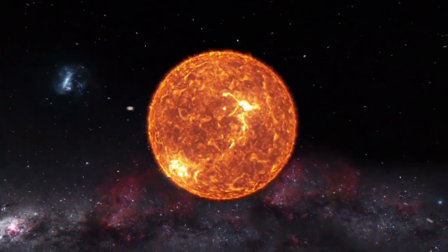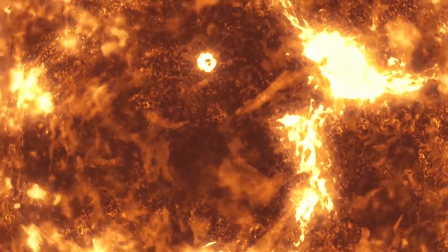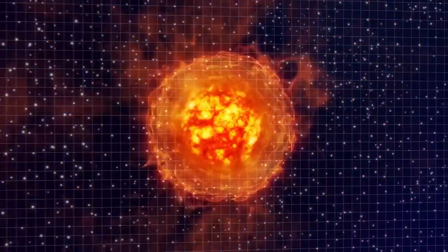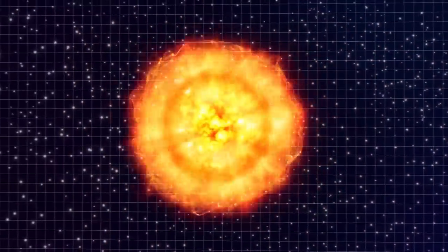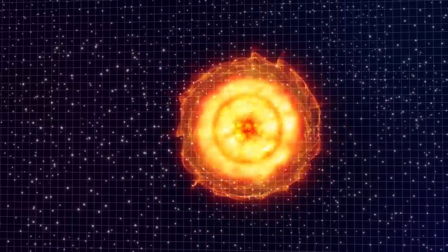Before going supernova, the star builds up heavy elements at its core, effectively growing its mass. After the mass reaches a critical point, known as the Chandrasekhar limit, it implodes. The implosion causes the star to become even hotter and denser. Then, eventually, it explodes, also in a gloriously violent manner.